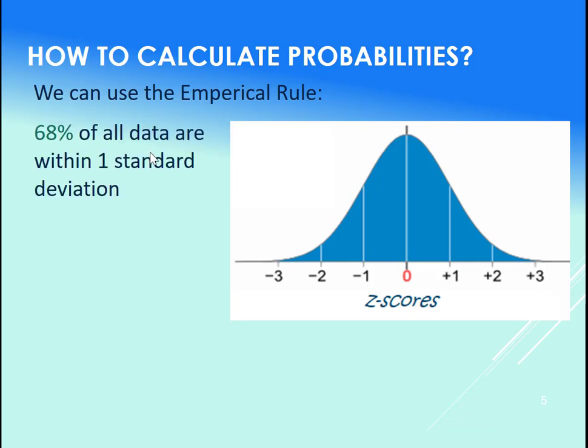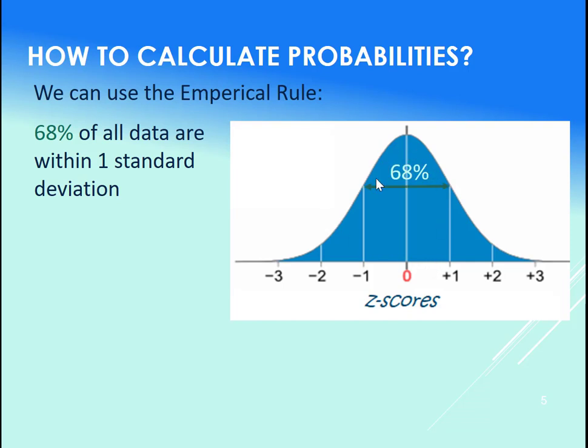So let's say here's our graph. We know that 68% of all data are within one standard deviation of the mean. So under this, between minus one and one here under the curve, we have 68% of our data.